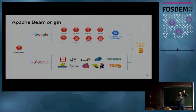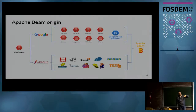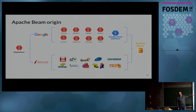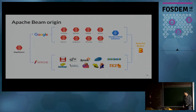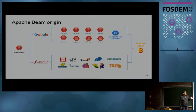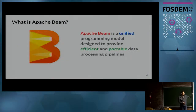What is exciting about Beam is that there were two big parallel lines of work in the big data world — everything happening at Google that nobody outside knew about except through publications, and the Apache community implementing some of these ideas like Hadoop or HBase. Apache Beam is a little bit like Google finally coming to open source and putting it all together.